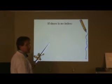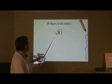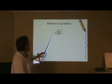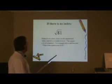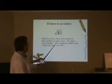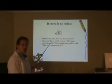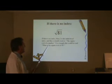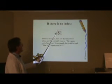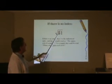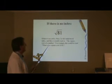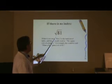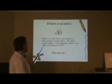If there is no index, that is to say, if it looks like this, where you just have the root sign but no number here, it is understood that the index is two, because that's the one we normally use. And this is called the square root of a number as well. For example, this one could be read as the square root of 81. And what it is asking is what number times itself twice equals 81? The answer? Nine.